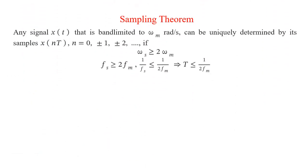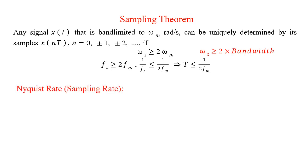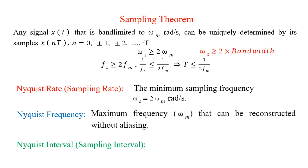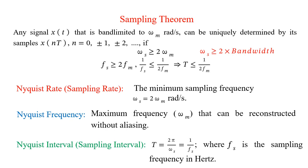The sampling theorem states that any signal band-limited to omega_m radians per second or fm Hz can be recovered exactly from its samples if the sampling frequency is greater than twice the maximum frequency component. For a low-pass signal, since the bandwidth equals omega_m, the sampling frequency should be greater than twice the bandwidth. The three key terms are: Nyquist rate — the minimum sampling frequency, equal to 2*omega_m; Nyquist frequency — the maximum frequency that can be reconstructed without aliasing, equal to omega_m; and Nyquist interval — the sampling interval T, the reciprocal of the sampling frequency.